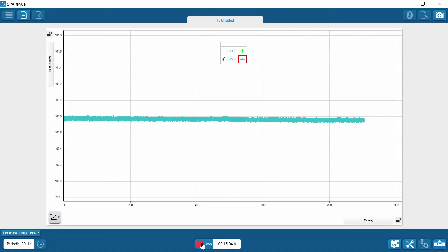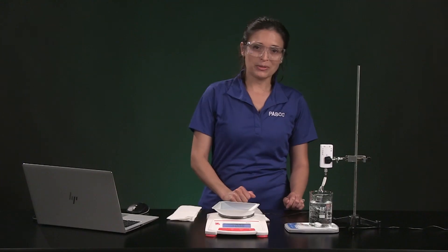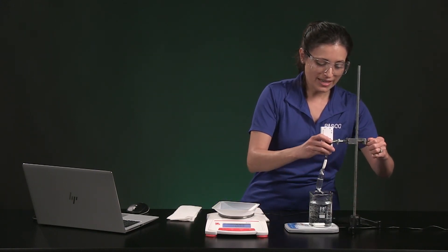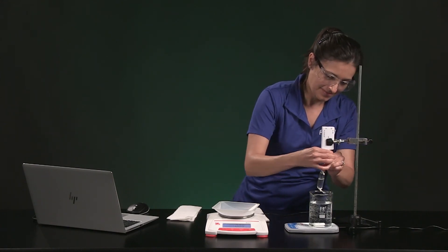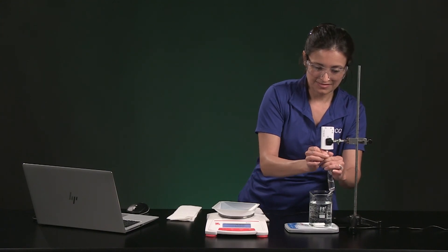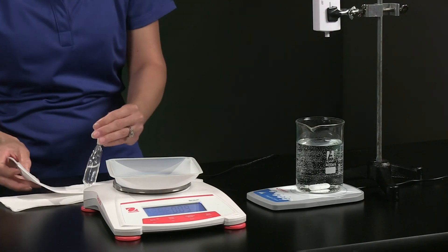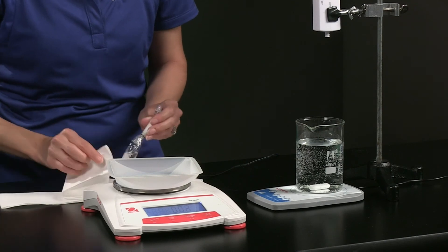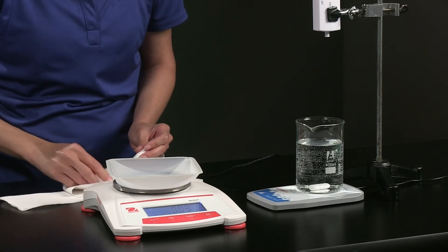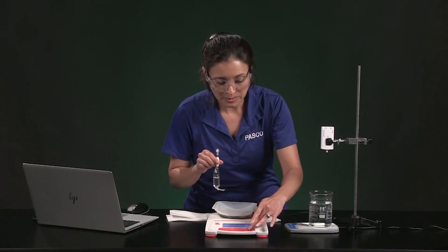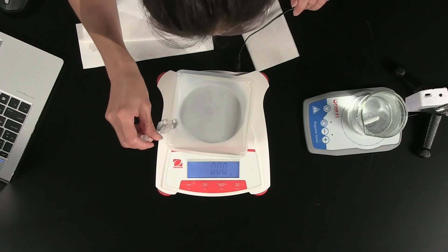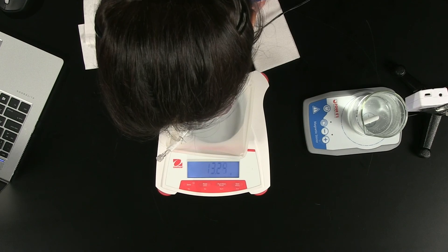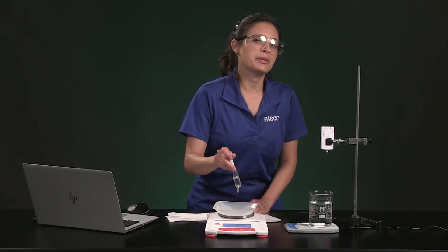It has been 15 minutes so I am going to stop collecting data. And now you can record the final mass of the water bag in table one. I am going to turn off the magnetic stirrer and retrieve the bag. I am going to dry the bag as much as possible. And I am going to record the mass. The mass is 13.13 grams.